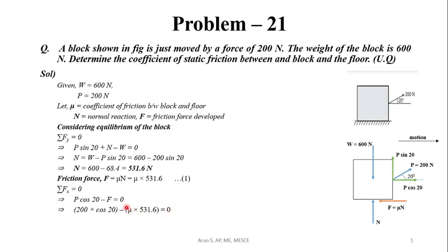From that, the only unknown value is μ. Rearranging, we get μ = 200 cos 20 / 531.6. From this, we find μ = 0.35.